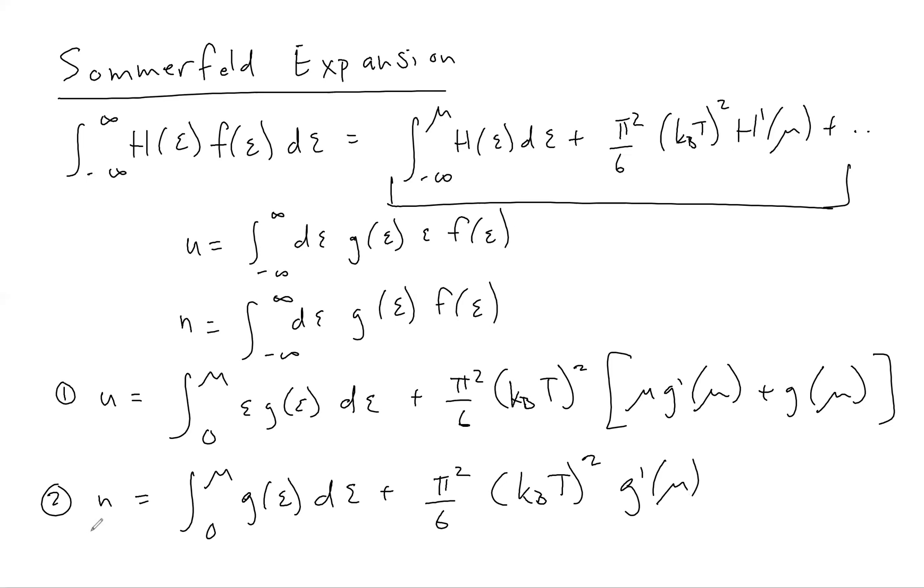The second equation, the equation for the density, will determine what mu is - it will fix the value of mu. It also tells us that mu will differ from the Fermi energy by terms of order T squared. You can see the correction is of order T squared here. At zero temperature, we would have mu equal to the Fermi energy EF, but we're going to get terms of order T squared as a correction.